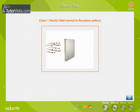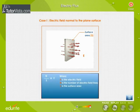Case 1: If the electric field is normal to the plane surface of area S, then the number of electric field lines per unit area is proportional to the magnitude of the electric field. This means that the number of electric field lines is proportional to the product of E and S. This product of E and S is called the electric flux and is represented by the symbol φ_E. φ_E equals ES.